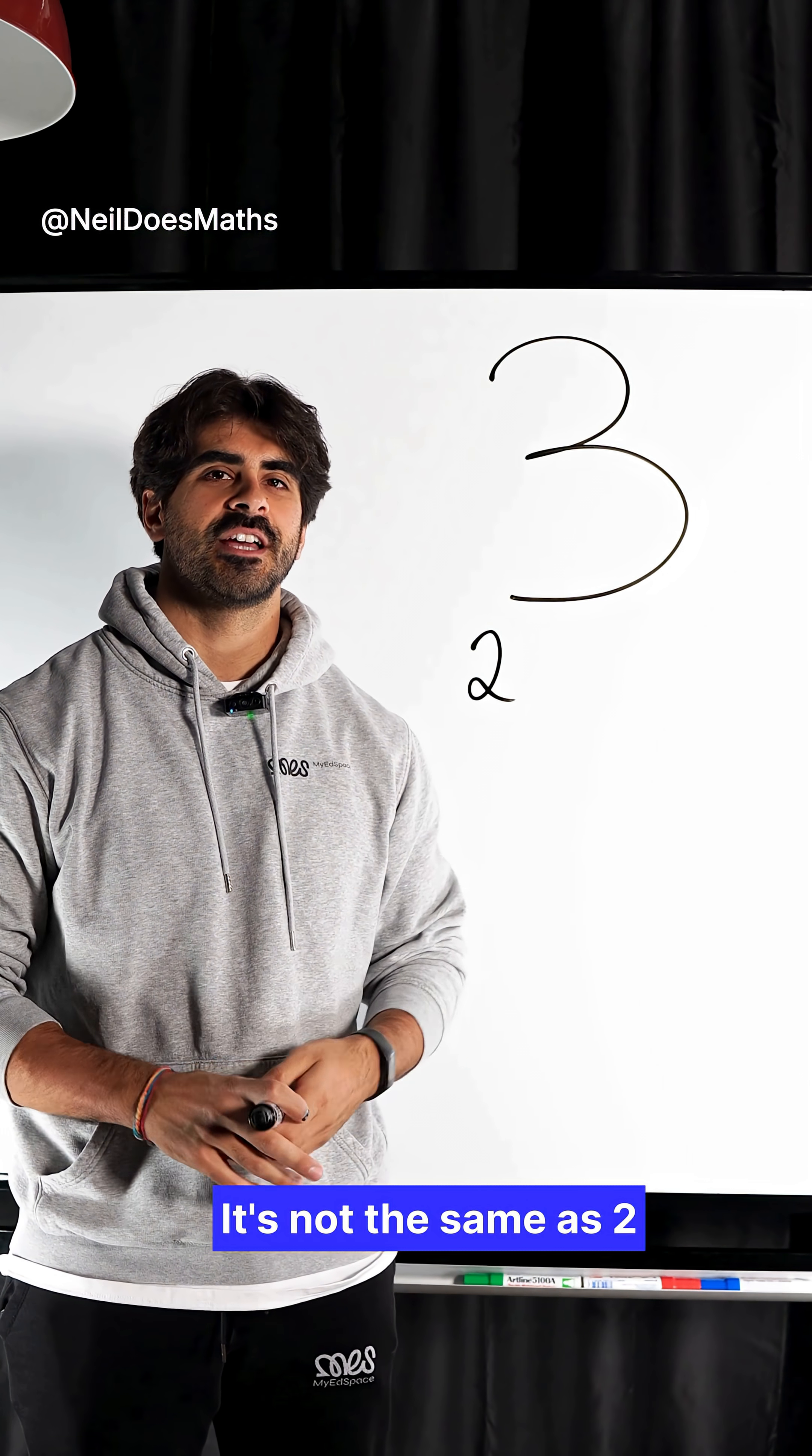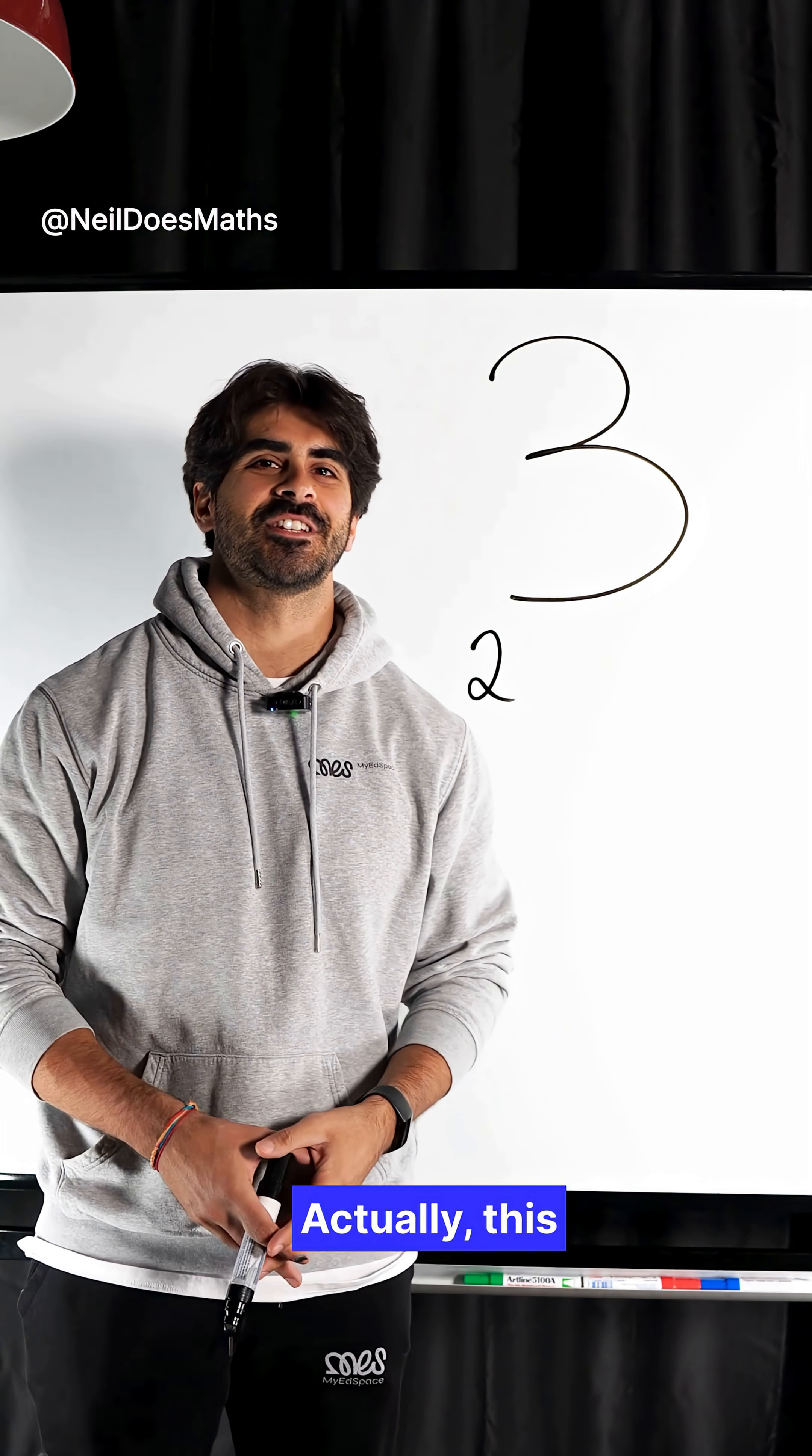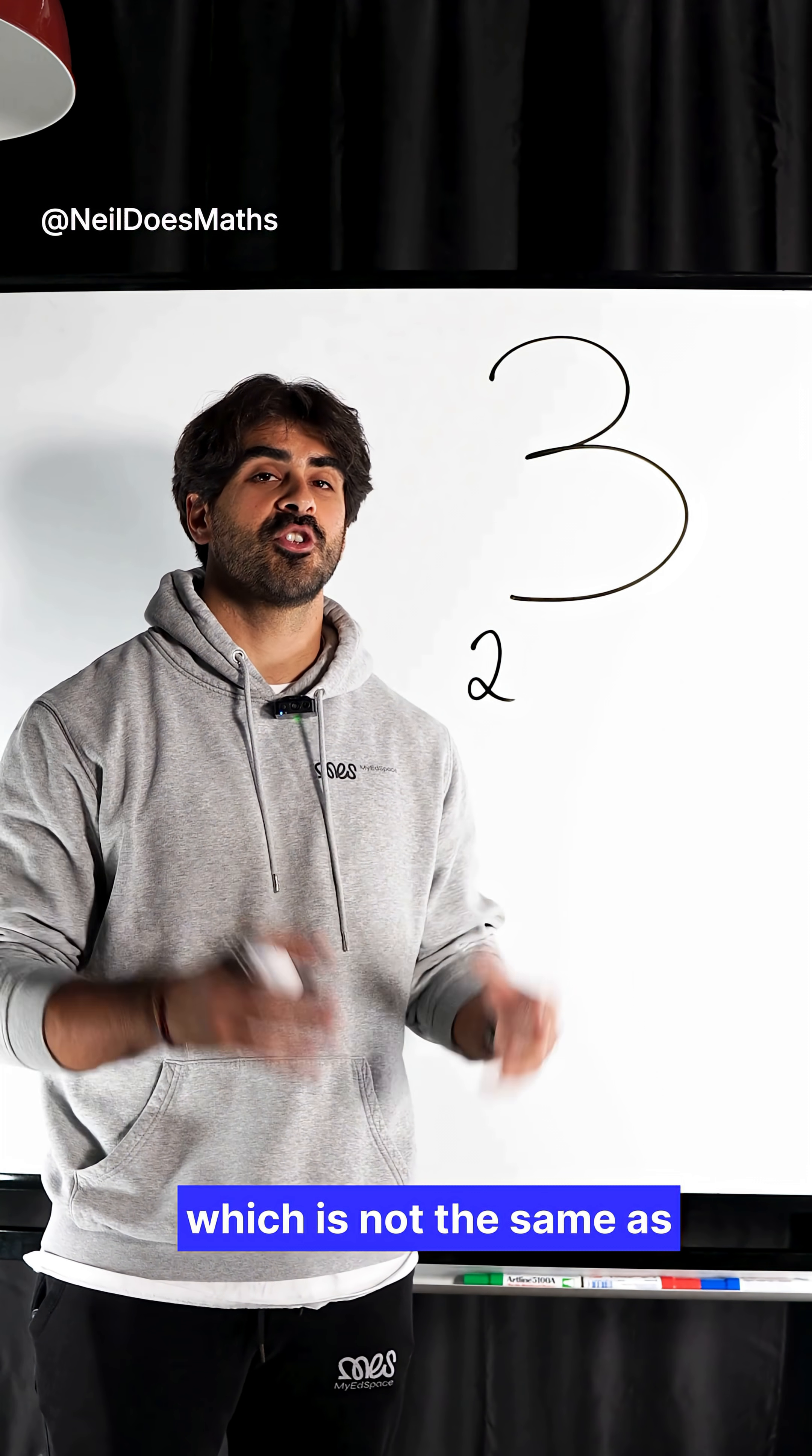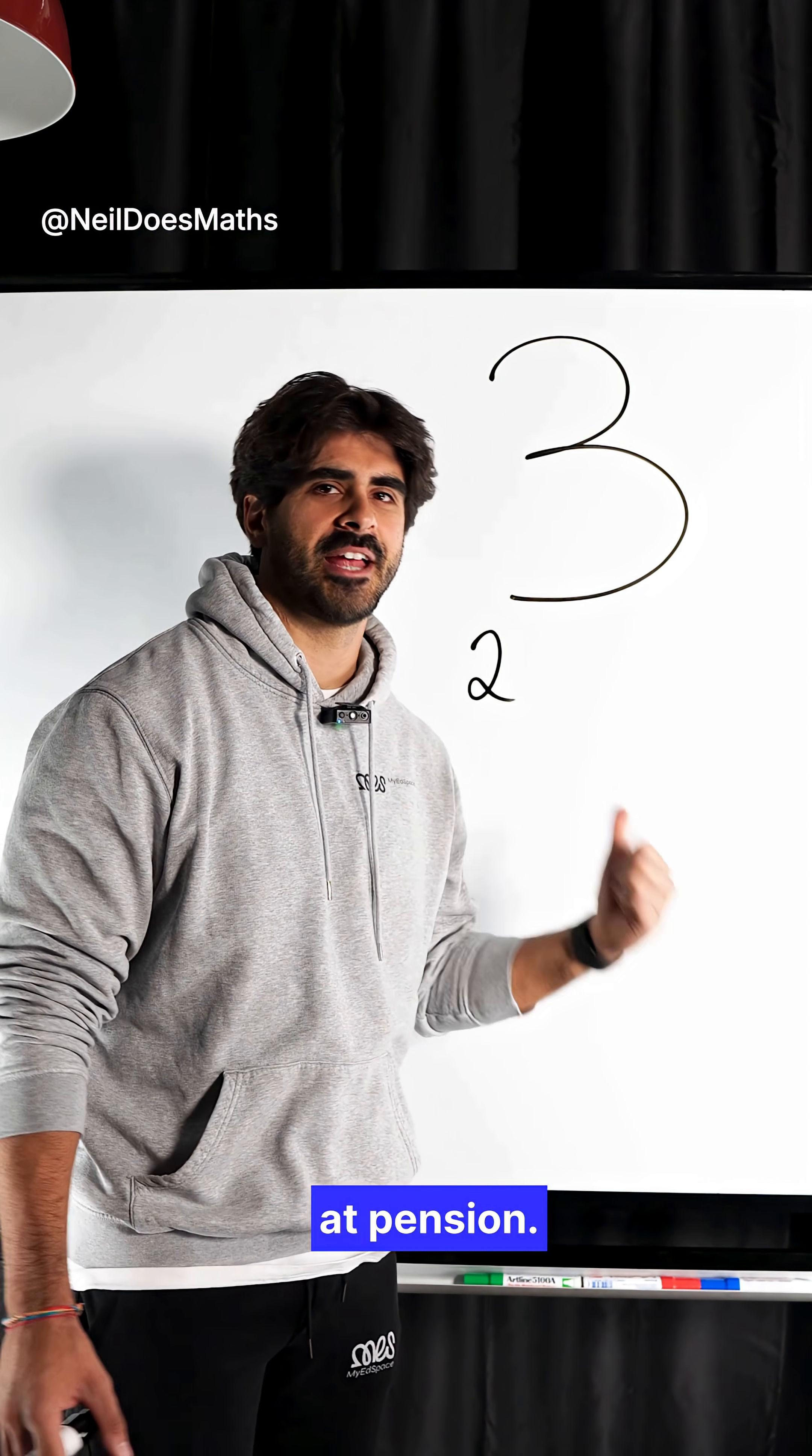Have you ever seen this before? It's not the same as two cubed because the three is bigger than the two. So what is it actually? This is known as pentation, which is not the same as tetration, which we did before. There's so many different ways of doing this stuff. Let's take a look at pentation.